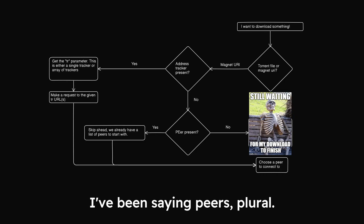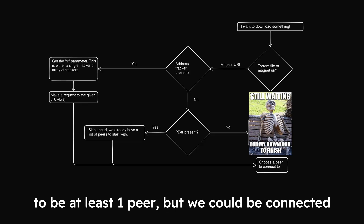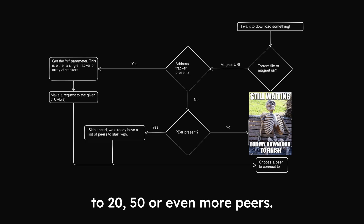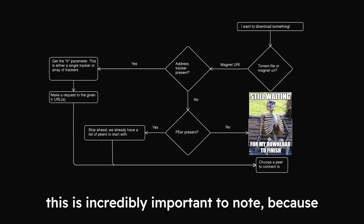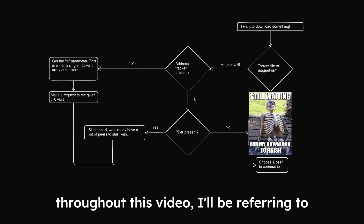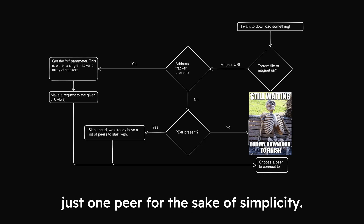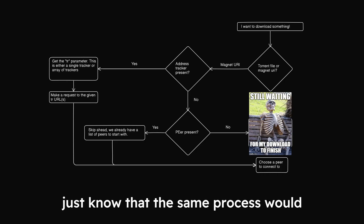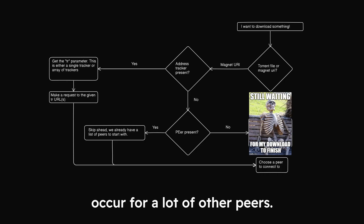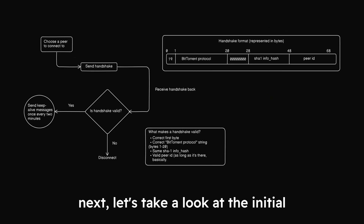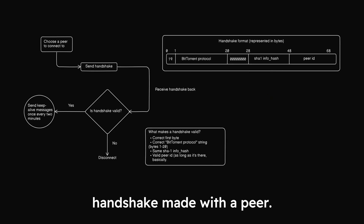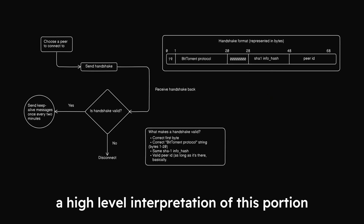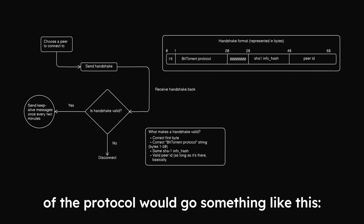You may have noticed that I've been saying peers, plural. This is because there does need to be at least one peer, but we could be connected to 20, 50, or even more peers. This is incredibly important to note because throughout this video I'll be referring to just one peer for the sake of simplicity — just know that the same process would occur for a lot of other peers. Next, let's take a look at the initial handshake made with a peer.